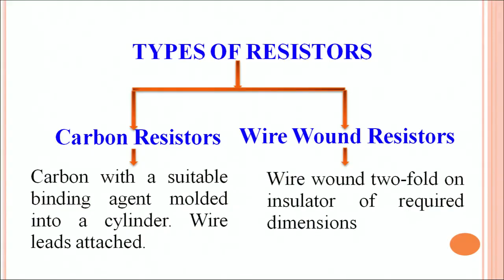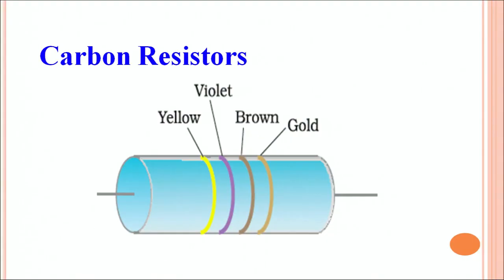There are two types of resistors. Carbon resistors: carbon with a suitable binding agent molded into a cylinder with wire leads attached. The other type are wire wound resistors: you take a wire of desired resistance, fold it in double, and then wound it over an insulator.